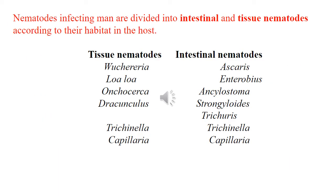Nematodes infecting man are divided into intestinal and tissue nematodes according to their habitat in the host. The intestinal nematodes include: Ascaris, Enterobius, Ankylostoma, Strongyloides, Trichuris, Trichinella, and Capillaria.